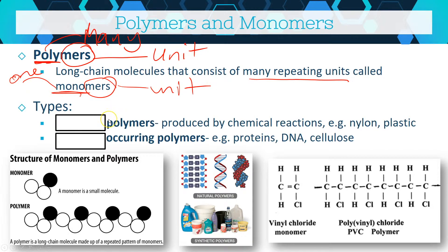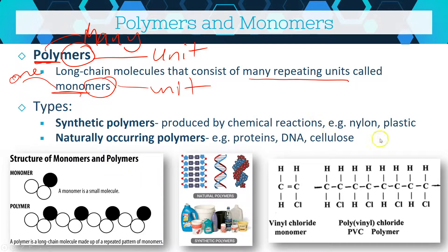There are a couple of different ways we can classify polymers. We can have synthetic polymers — these are ones produced by chemical reactions, normally synthesized in a lab. Things like nylon and different types of plastic polymers fit into this category. On the other hand, we also have naturally occurring polymers. These are proteins, DNA, cellulose — stuff we find in nature that are made up of long chain molecules of lots of repeating units.